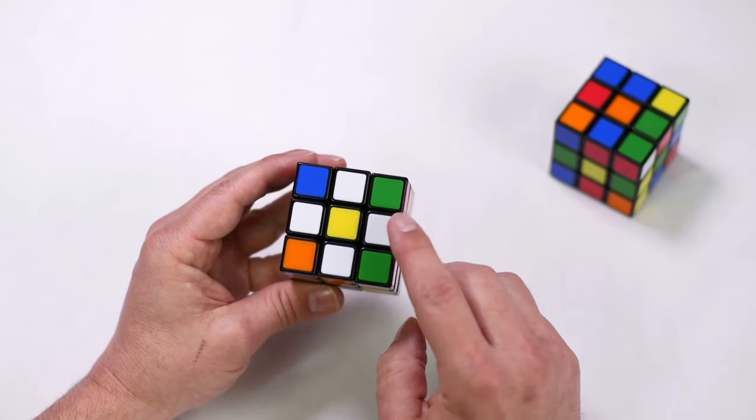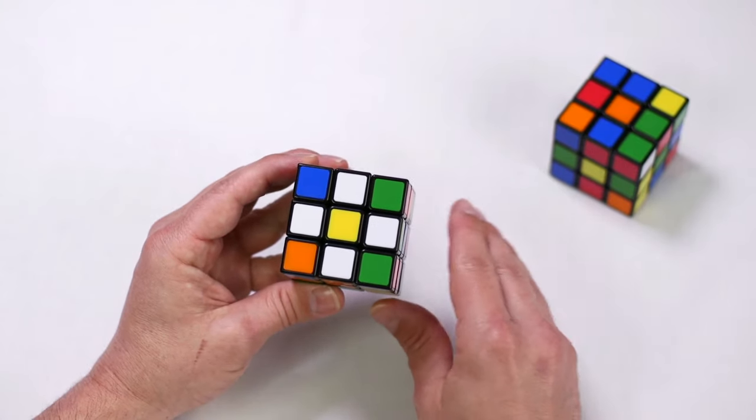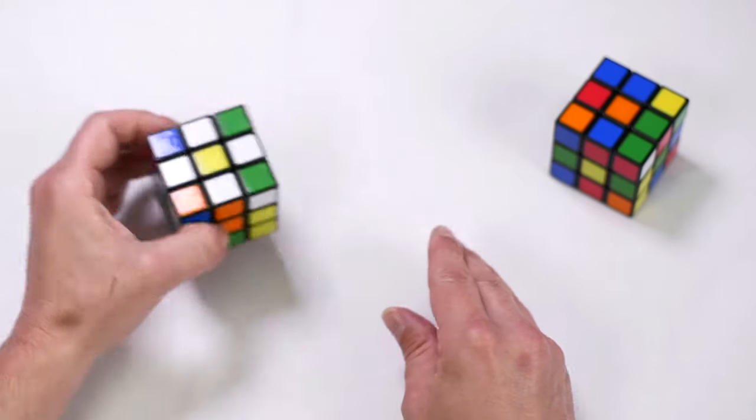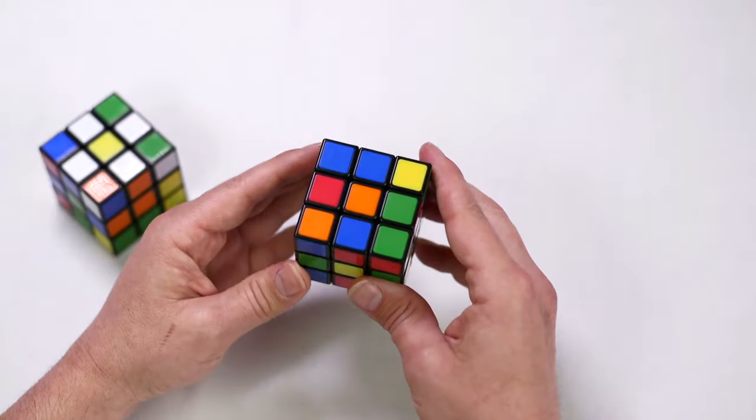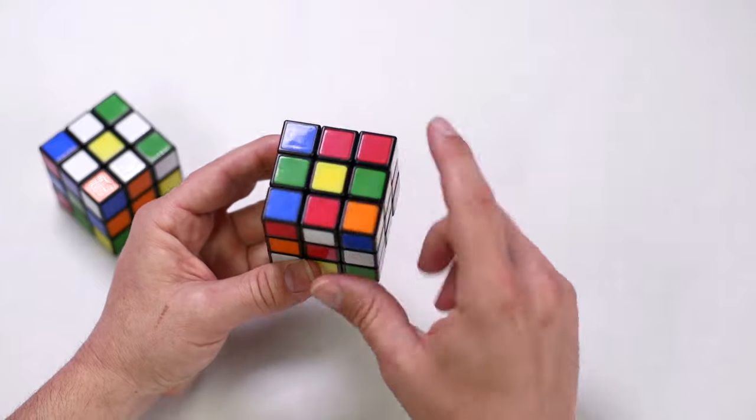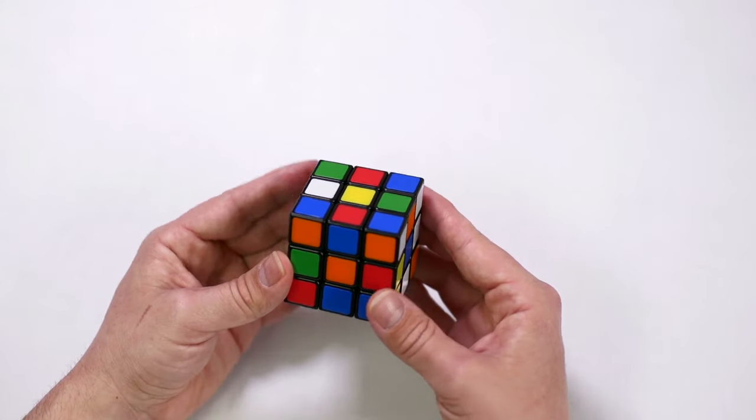All we are focusing on is the four white edge pieces. You can ignore all other pieces for now. Start by holding your cube with the yellow center pointing upwards. Let's look at the top layer first.